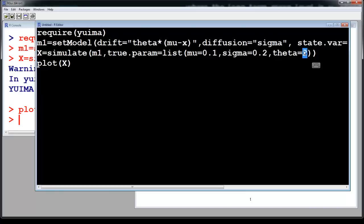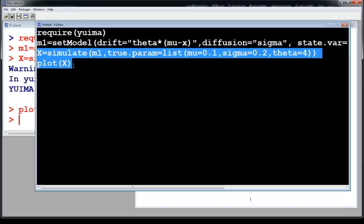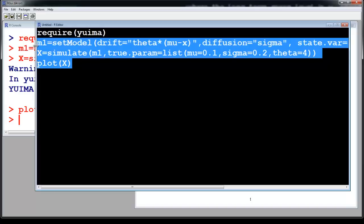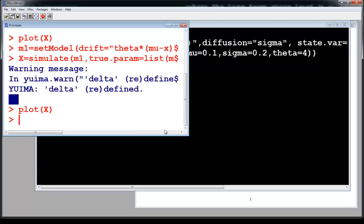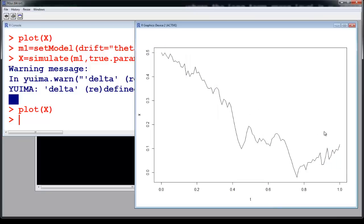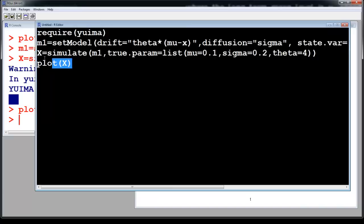So let us make theta as 4 and let us plot this again. So now you can see. So every time you plot it, it is just going to give you different values.